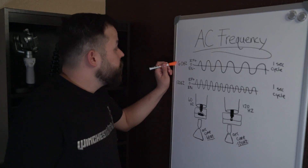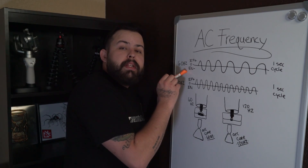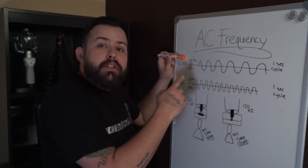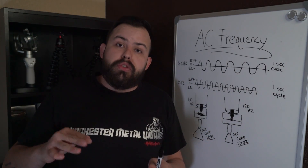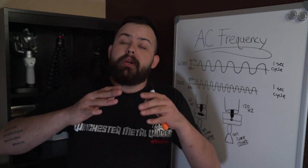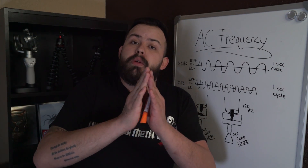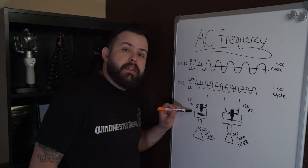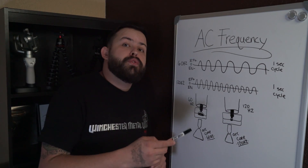AC frequency — 60 Hertz versus 120 Hertz. Top is electrode positive, bottom is electrode negative, and the middle ground is zero. On 60 Hertz, you're going to move back and forth from electrode positive to electrode negative a lot less than on 120 Hertz. The more times the current changes direction in a one second interval, the more it helps keep the arc narrow and the arc cone tight and focused. Versus having more time on EN or EP, which allows the arc to widen out. As you can see, the arc cone coming off the 60 Hertz tungsten is a lot wider than the arc cone coming off the 120 Hertz tungsten.